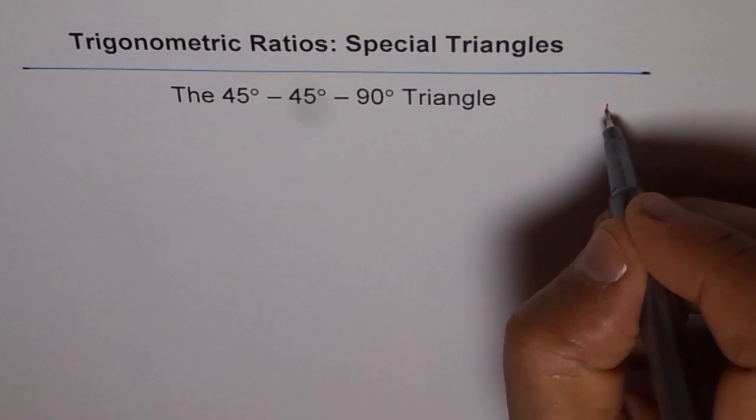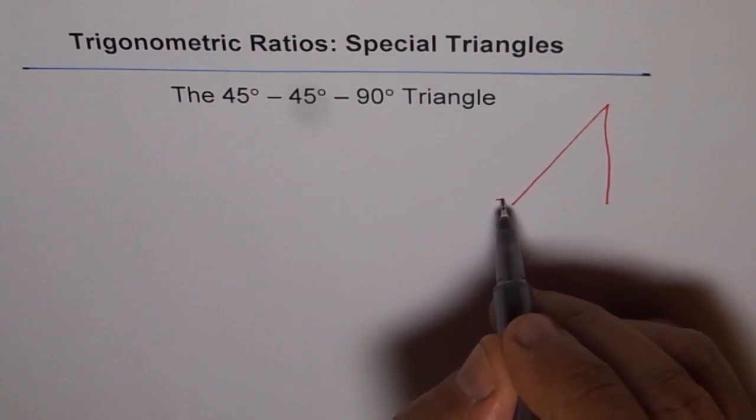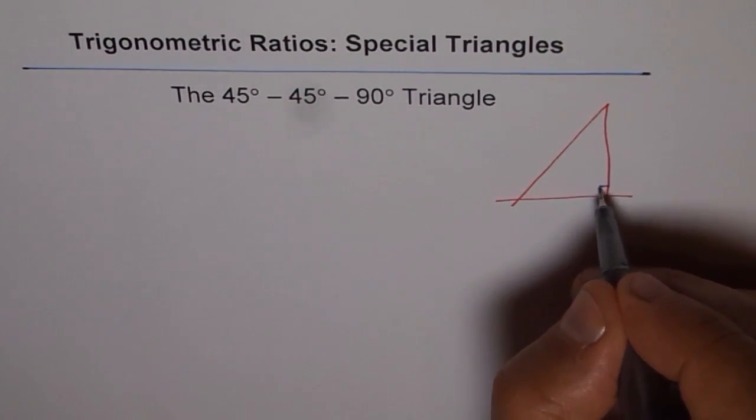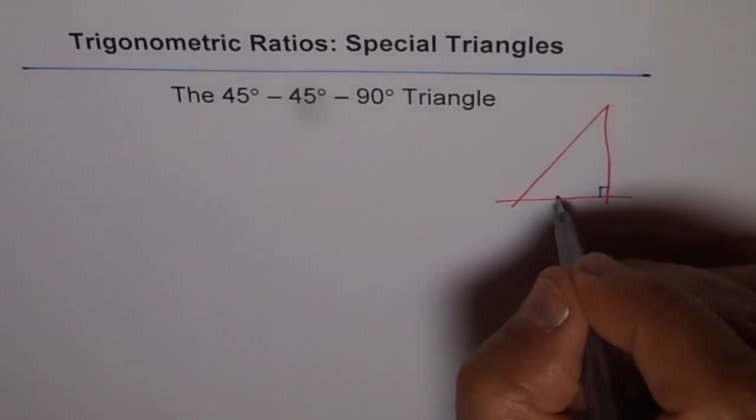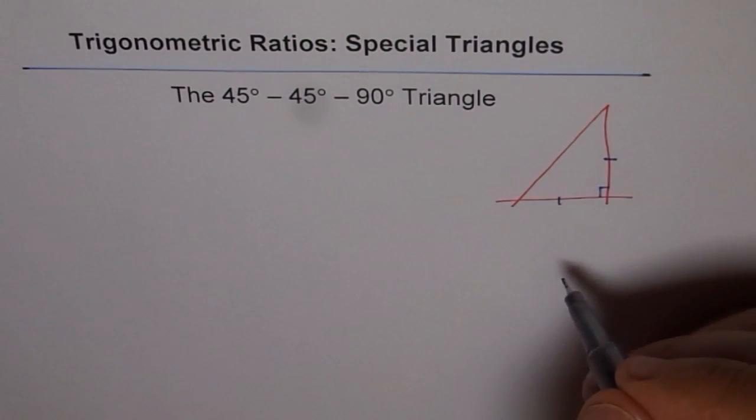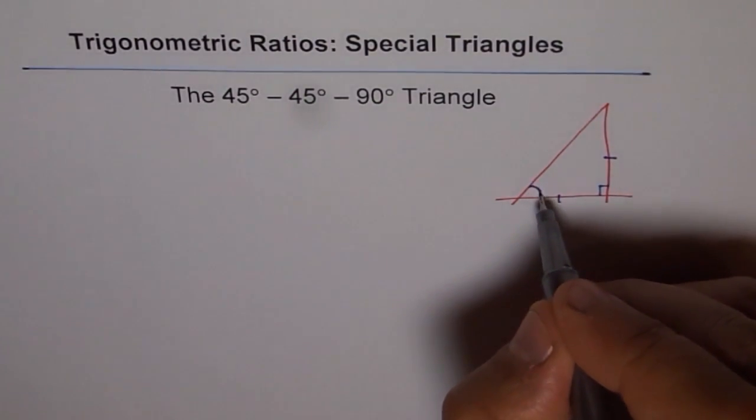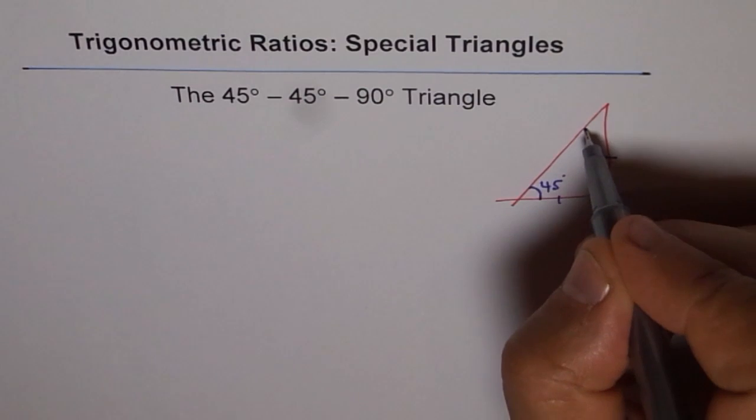Let me draw one for you. Let's say this is our special triangle where that happens to be 90 degrees and we have these equal sides. They don't really look like it but imagine that these two sides of the triangle are equal.